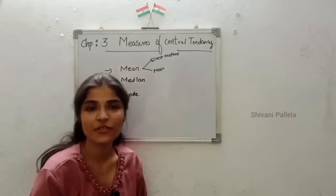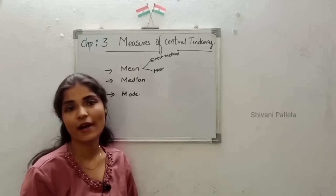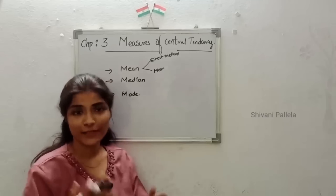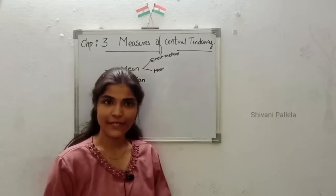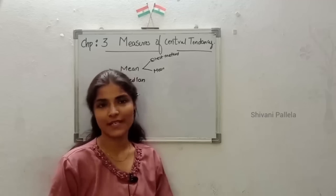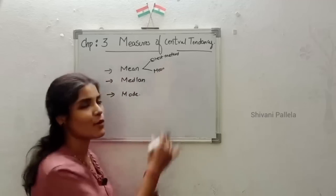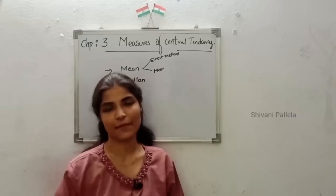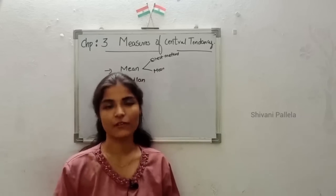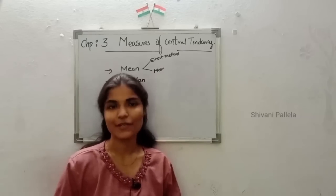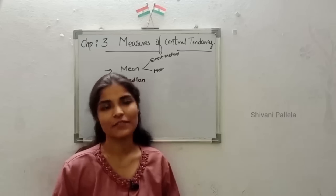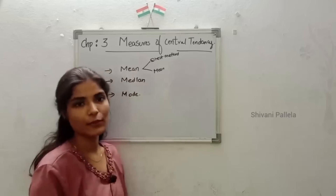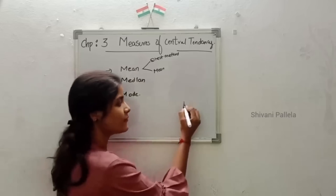This is Chapter 3 on Measures of Central Tendency from Business Statistics 1, Semester 3. Good news: the whole syllabus of Business Statistics 1 has been completed. The second, third, fourth, and fifth chapter explanation videos are available on our channel, so please check them out. In this video, I am going to discuss the third unit.